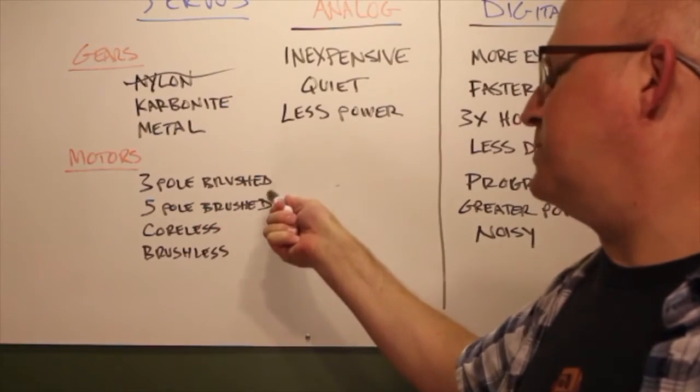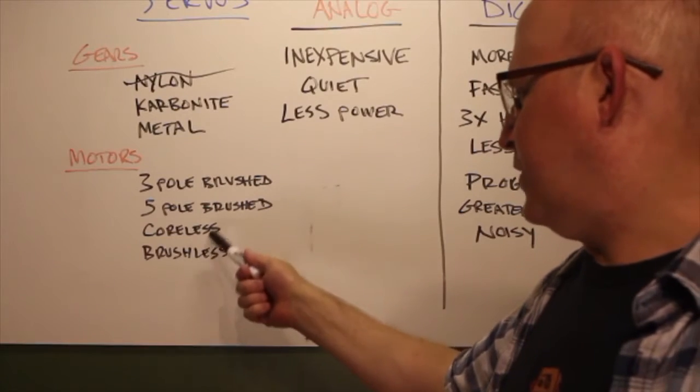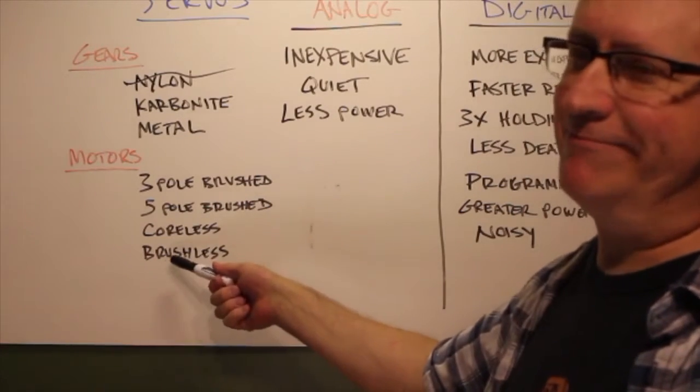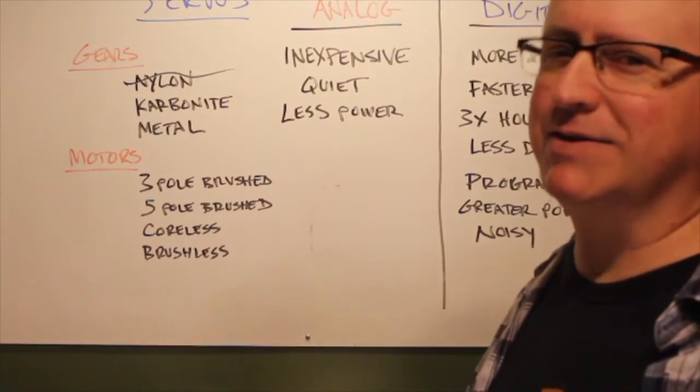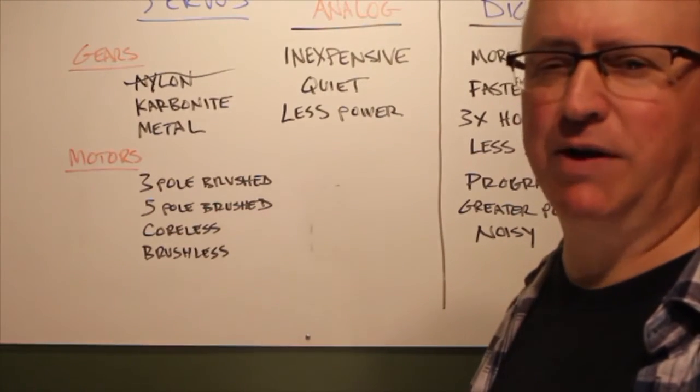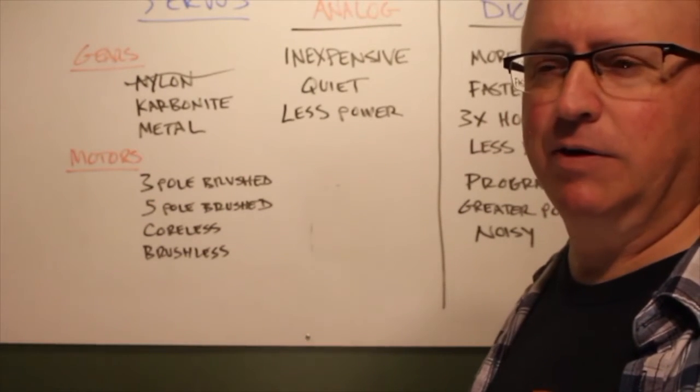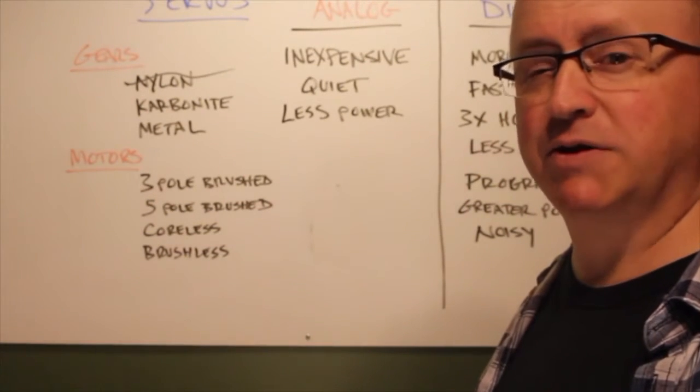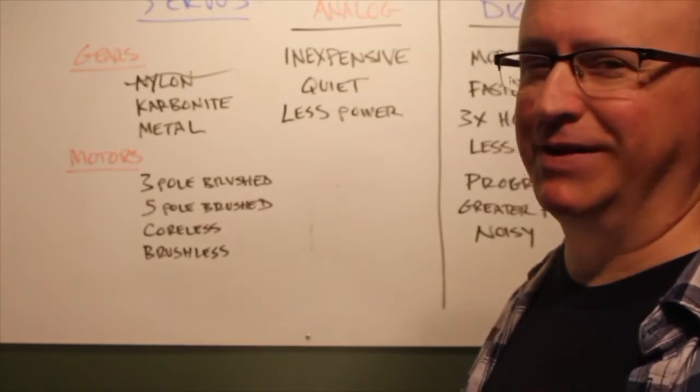From there you go to different types of motors. They have three pole brushed, five pole brushed, coreless and brushless. Brushless, that's like super high end, top of the line type stuff. Not really necessary. That's more like for high performance planes, cars and that kind of stuff. They're supposed to have a little bit better power consumption. Supposed to be a little bit smoother. Haven't used any myself, so I really can't say.